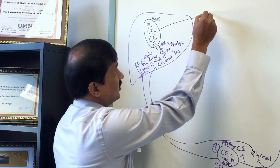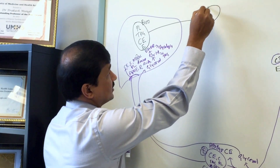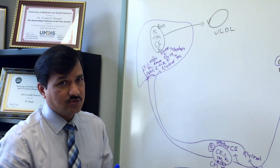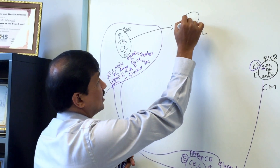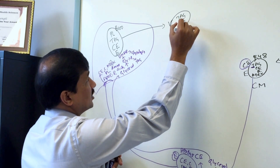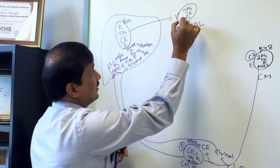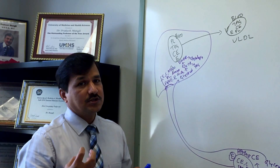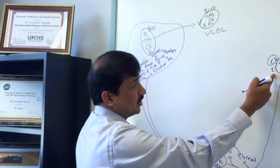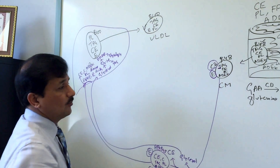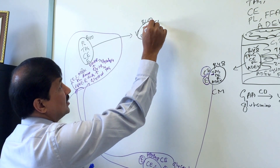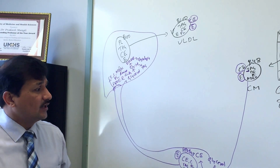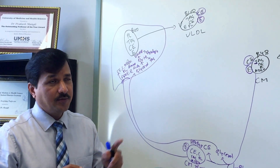This VLDL is secreted into the circulation as nascent VLDL — a newly synthesized VLDL molecule. It contains triacylglycerol as its major component, along with cholesterol ester, phospholipid, vitamin E, and ApoB100 on the surface. In the circulation, it acquires ApoC2 and ApoE from HDL, just as chylomicrons do. Once it has received ApoC2 and ApoE from HDL, it is considered mature VLDL.